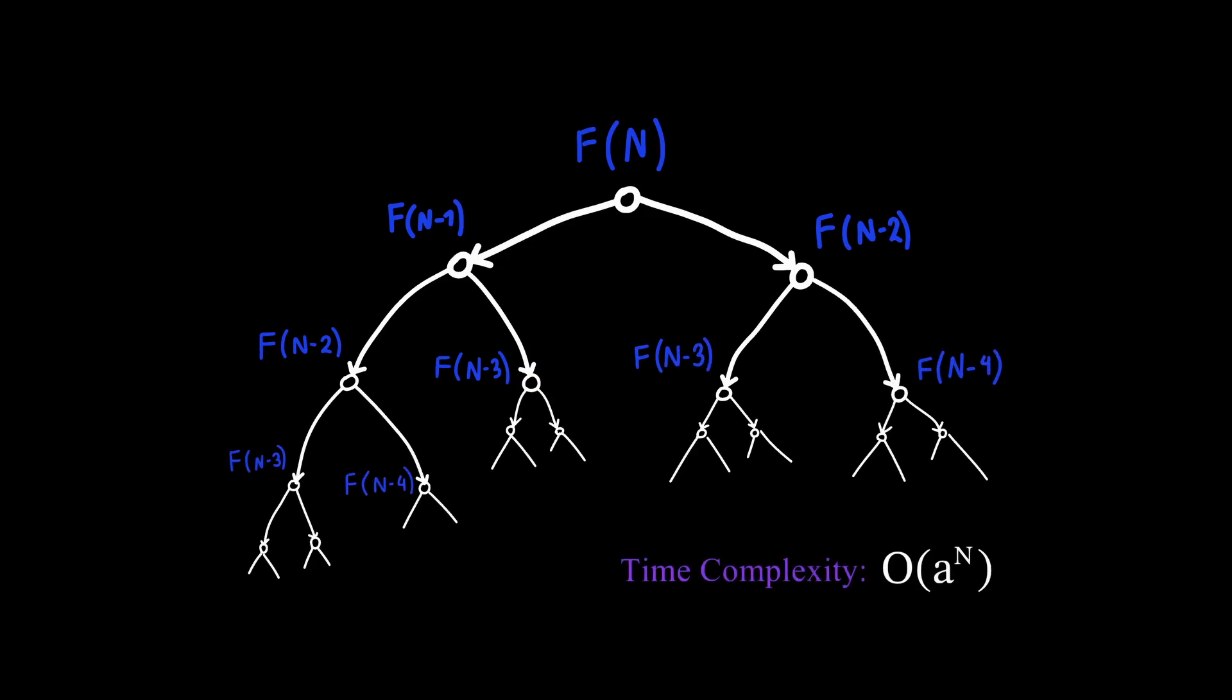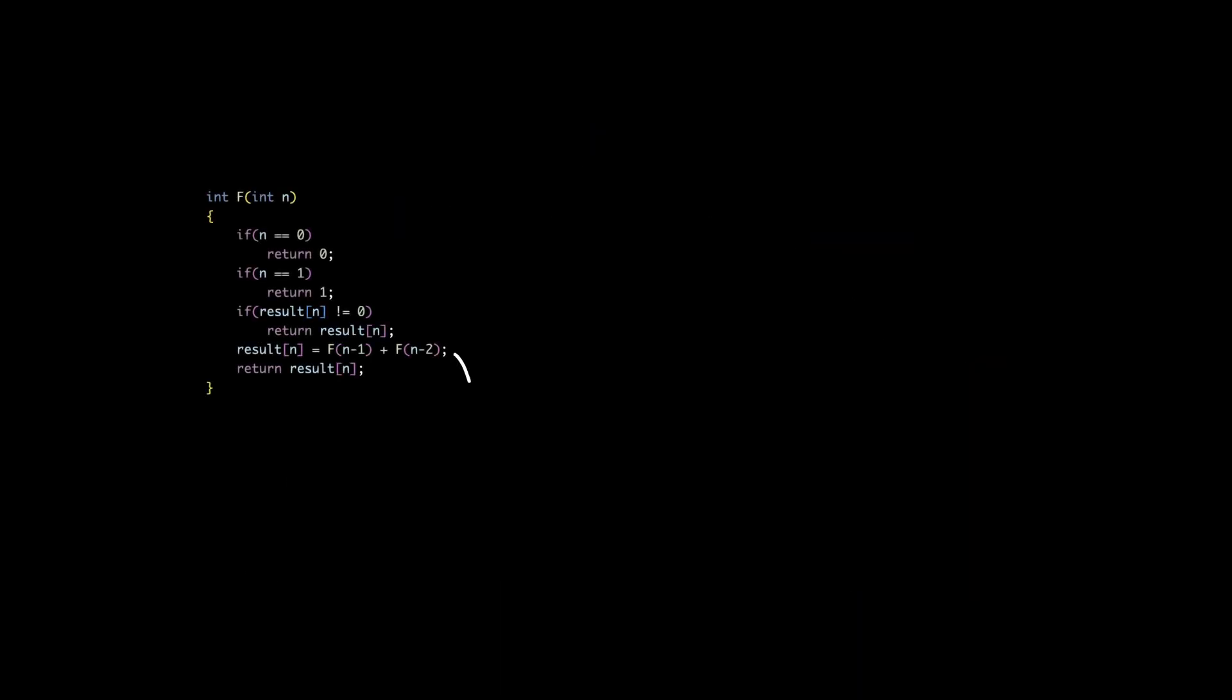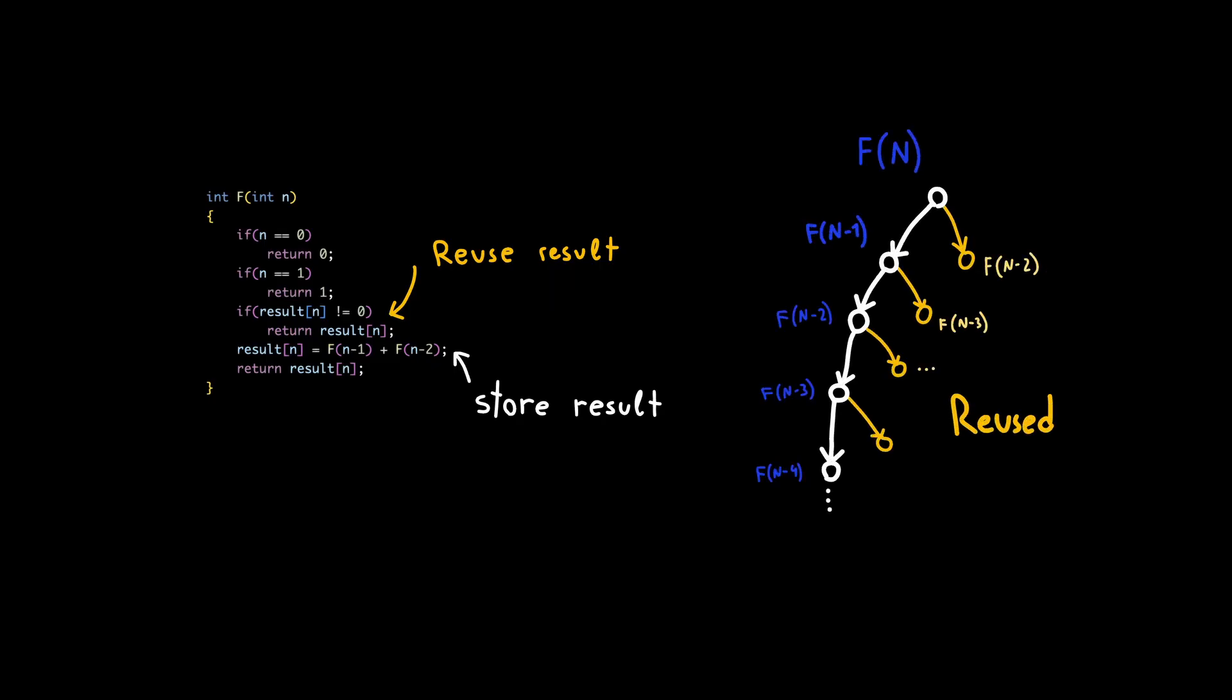But we can implement memoization. Here we store the result into an array. Now we calculate each F(n) only once and then reuse the results. This greatly reduces time complexity to O(n).